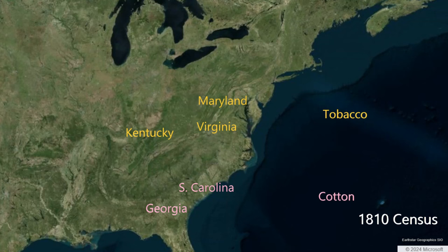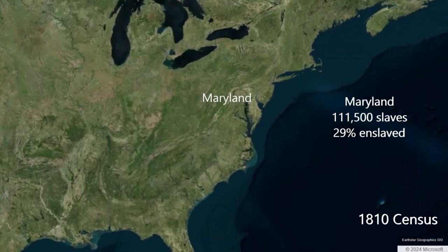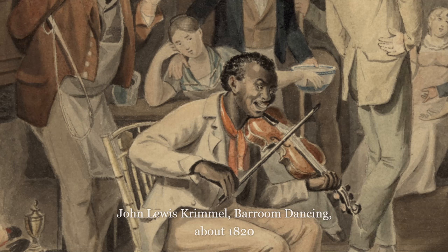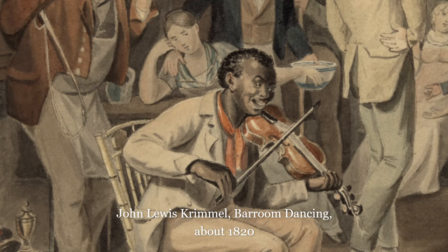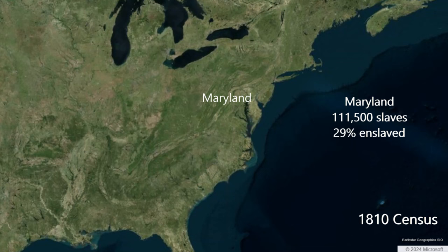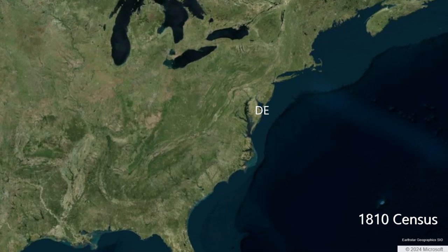Maryland had 111,500 slaves in 1810, about 29% of its population. An interesting feature of upper South states is the presence of many slaves and also a large free African American population. In 1810, there were 34,000 free African Americans in Maryland, so about 1 in 4 African Americans in Maryland were free men. Whereas Maryland has a large number of slaves, her neighbor Delaware is moving toward fewer slaves. In 1810, Delaware has 4,200 slaves — half the number from a generation previous during the 1790 census. About 6% of the population of Delaware is enslaved, closer to New Jersey than a cash crop state like Maryland or Virginia.